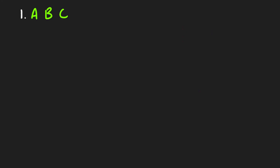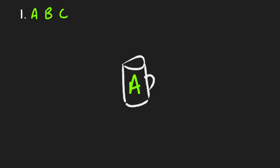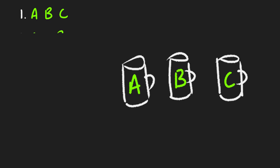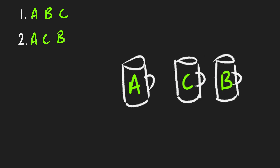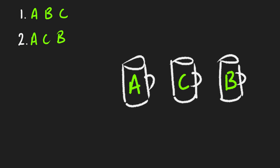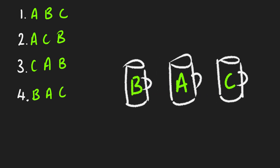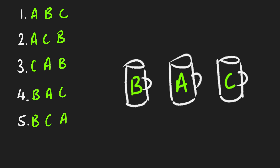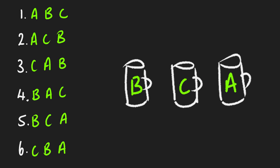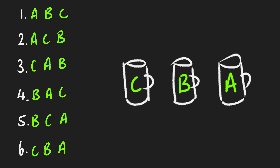So let's have a little think about the ways in which they could all select their beers. First off we could have the first person selecting A, the second selecting B, and the third selecting C. Or we could have the first A, the second C, the third B. Or we could have the first C, the second A, and the third B. Or the first B, the second A, and the third C. Or we could have the first B, the second C, the third A, or the first C, the second B, and the third A. So there's six different ways in which they could select their beer.